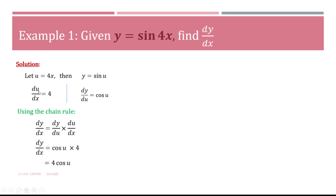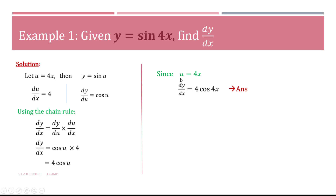Once we have found du/dx and dy/du, we apply the chain rule. On the right-hand side: dy/du is cos u and du/dx is 4, so we have cos u multiplied by 4, which simplifies to 4 cos u. However, since our original function had no letter u, we must re-substitute u equals 4x into the final line, giving dy/dx equals 4 cos 4x.